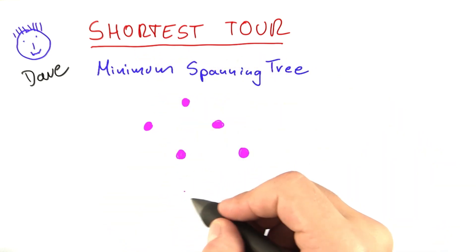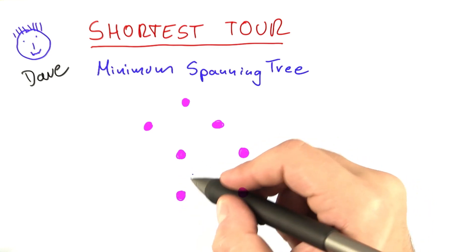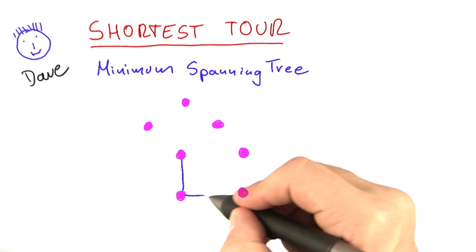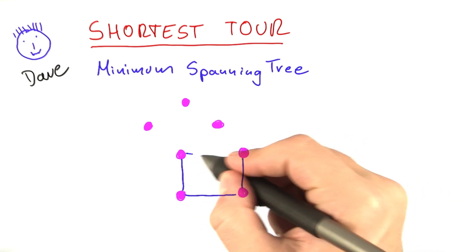So in the case of shortest tour, those were distances, but it can be other values as well. That doesn't really matter. The important thing is that each edge must have a certain value attached to it, such as in this one here.